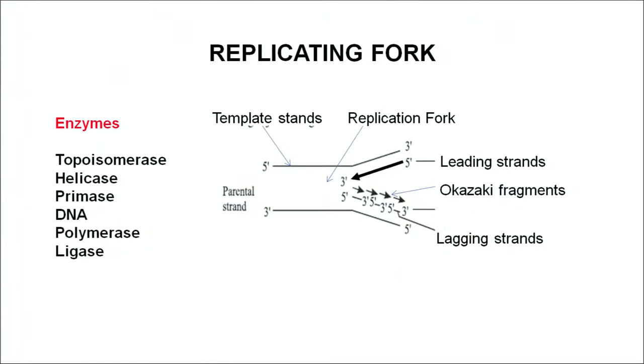The first step is the unwinding of the DNA double helix. It takes place with the help of enzymes topoisomerase and helicase. These enzymes bind at the replication fork. DNA can be replicated only at special origin of replication fork places. At the replication fork, topoisomerase and helicase bind to DNA, open it up, and make a fork so that the synthesis of new strands can take place.